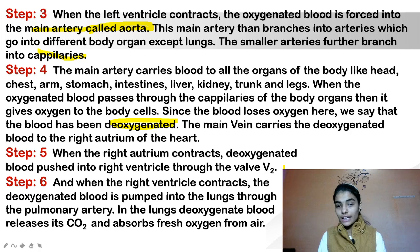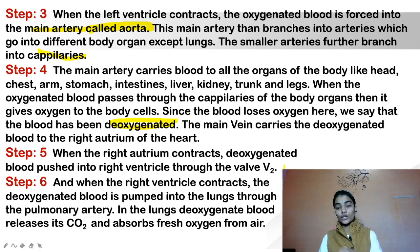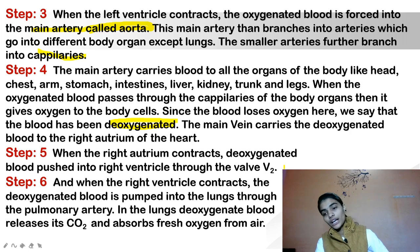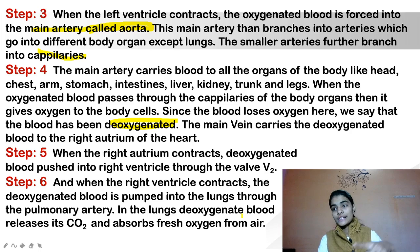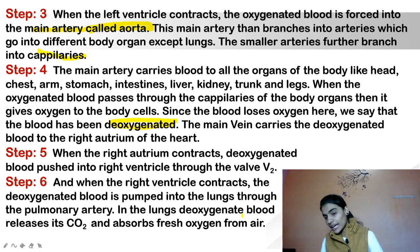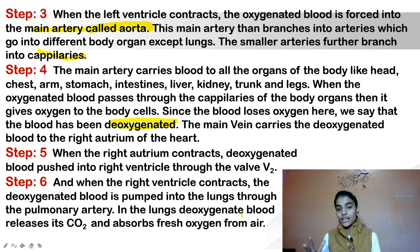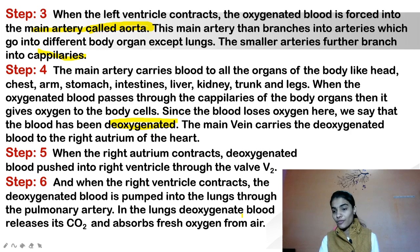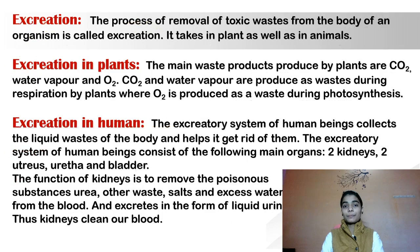In the lungs, the de-oxygenated blood releases its CO2 and absorbs fresh oxygen, becoming oxygenated again. This blood then returns to the heart through the pulmonary veins. This entire process is performed within milliseconds. So this completes the topic of the human circulatory system. Now moving ahead to the last topic of this chapter — excretion.